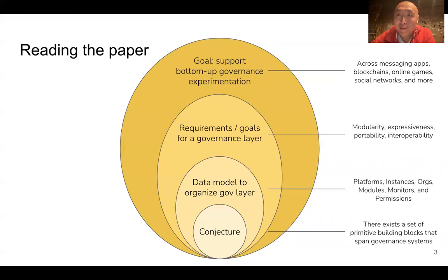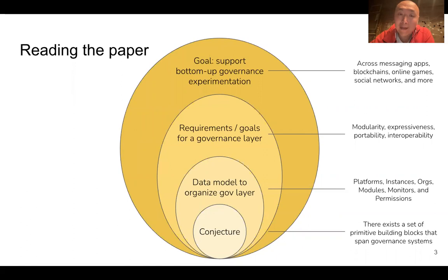Reading the actual paper, you'll find that it's broken into four sections. At the very top, there is a discussion of the motivation — really to support bottom-up kinds of governance experimentation across a wide range of online communities. How can we support that governance experimentation? We want to build a governance layer and articulate the requirements that governance layer should respect, including things like modularity and expressiveness. We then define a data model which organizes that governance layer, organizing both software and experiments within it. And finally, we connect all of the above to a set of conjectures and social science concepts.